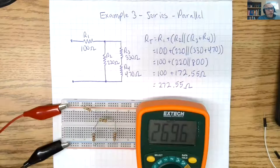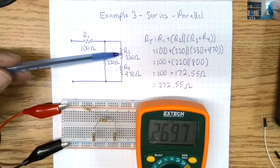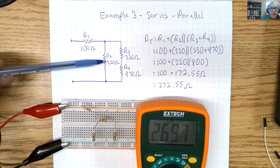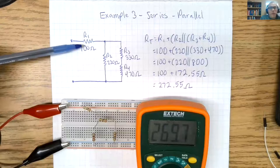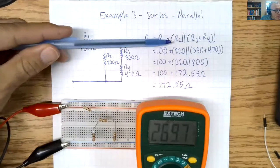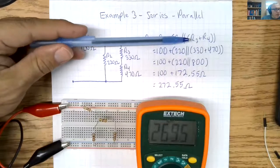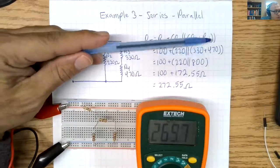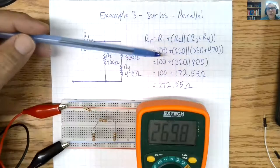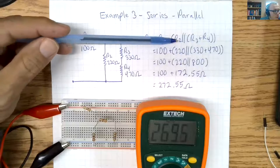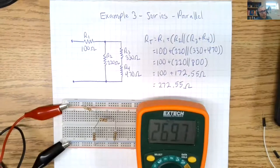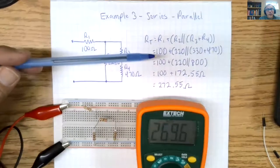So in our third example, I have R3 in series with R4. Together, they are in parallel with R2. And all of this together is in series with R1. So my formula for RT is R1 plus bracket R2 in parallel with, bracket again, R3 plus R4, close the bracket, close the bracket. The brackets are important. If I didn't have the brackets, it would basically be R2 in parallel with R3 plus R1 plus R4, which is what we had in the last circuit. So the brackets are important to calculate this correctly.